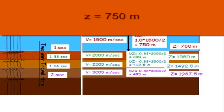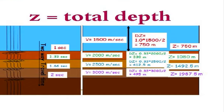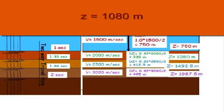Z equals 750 meters. Second zone. V equals 2,000 meters per second. DZ equals 0.33 seconds times 2,000 divided by 2 equals 330 meters. Z equals 1,080 meters.